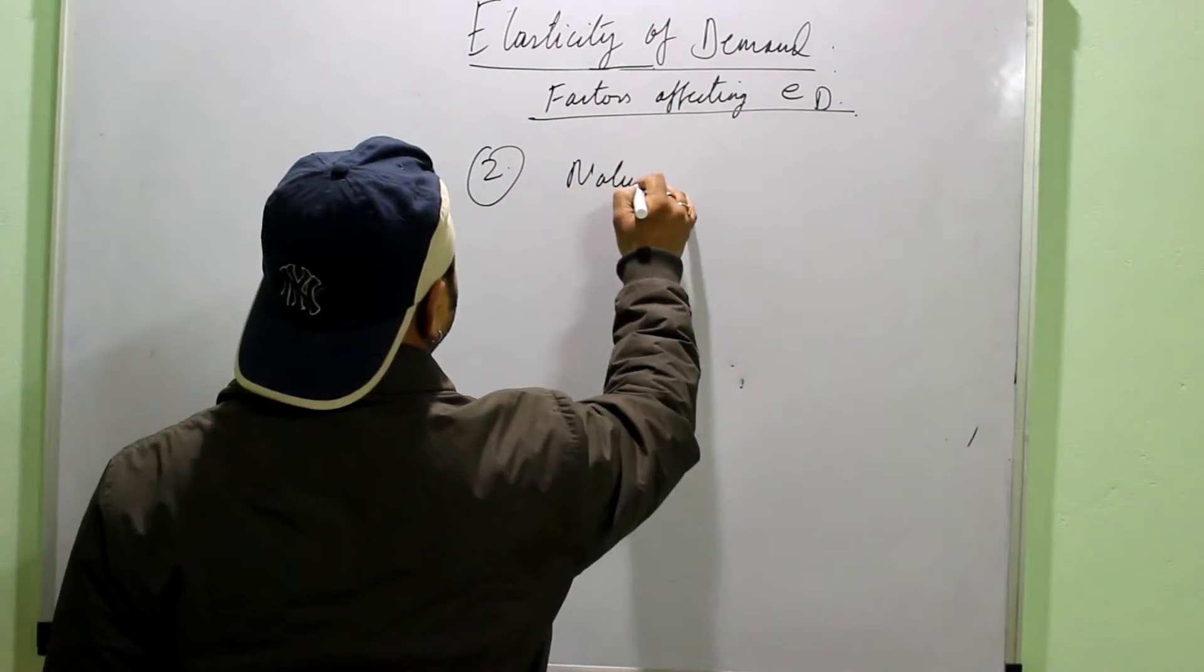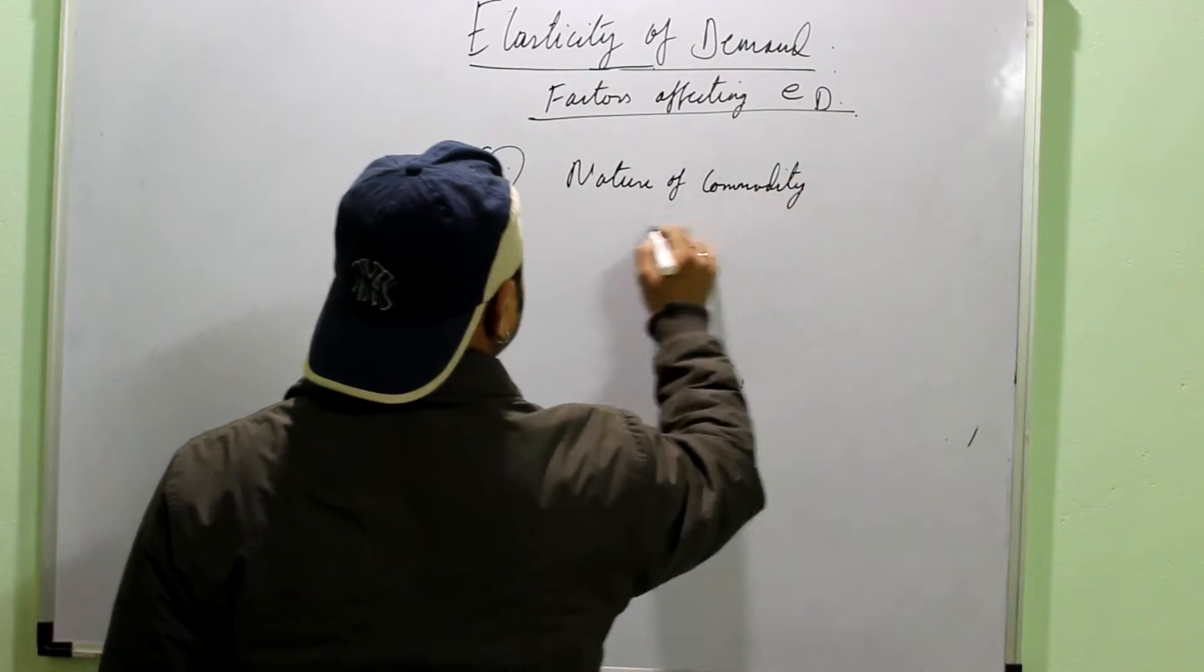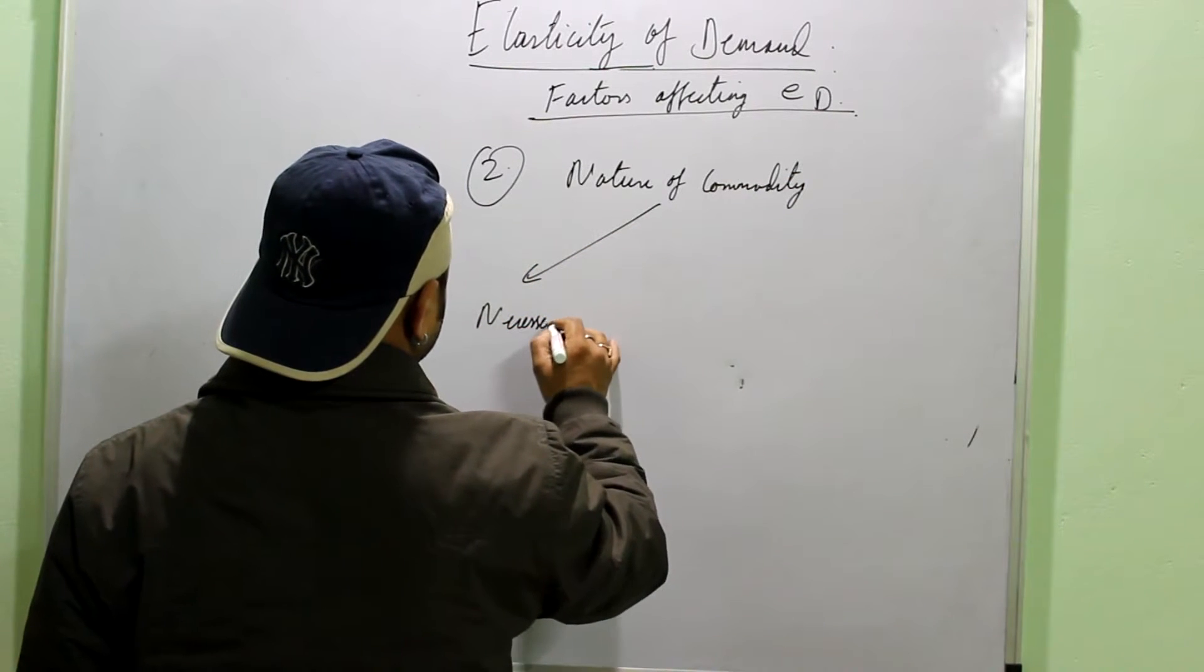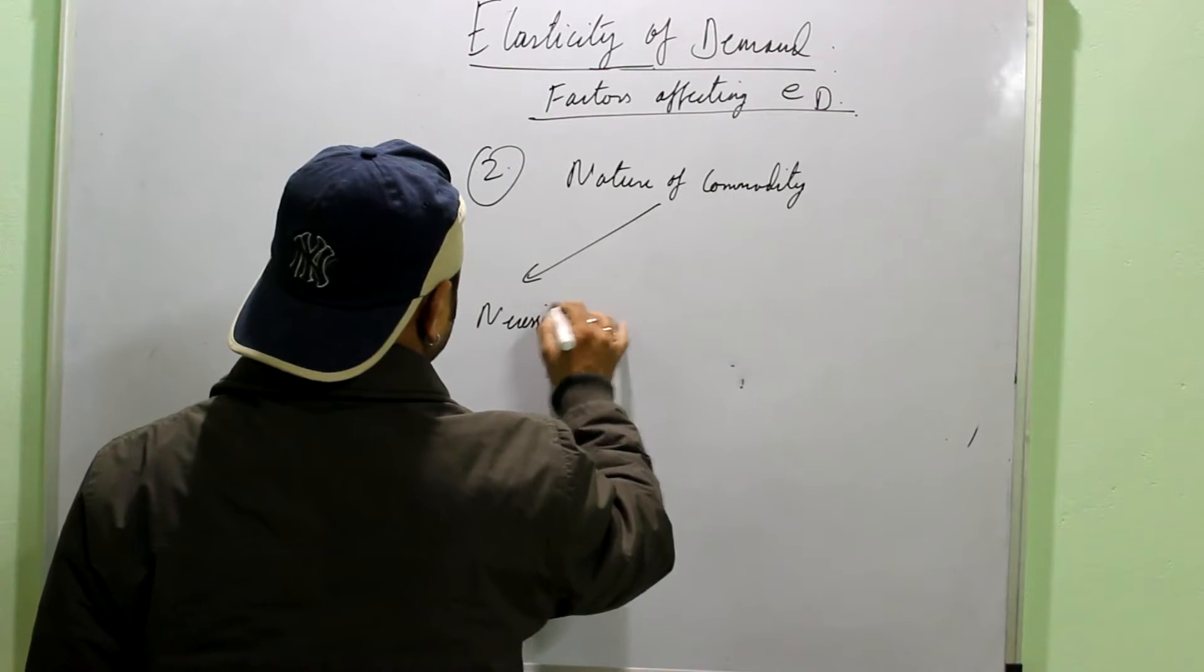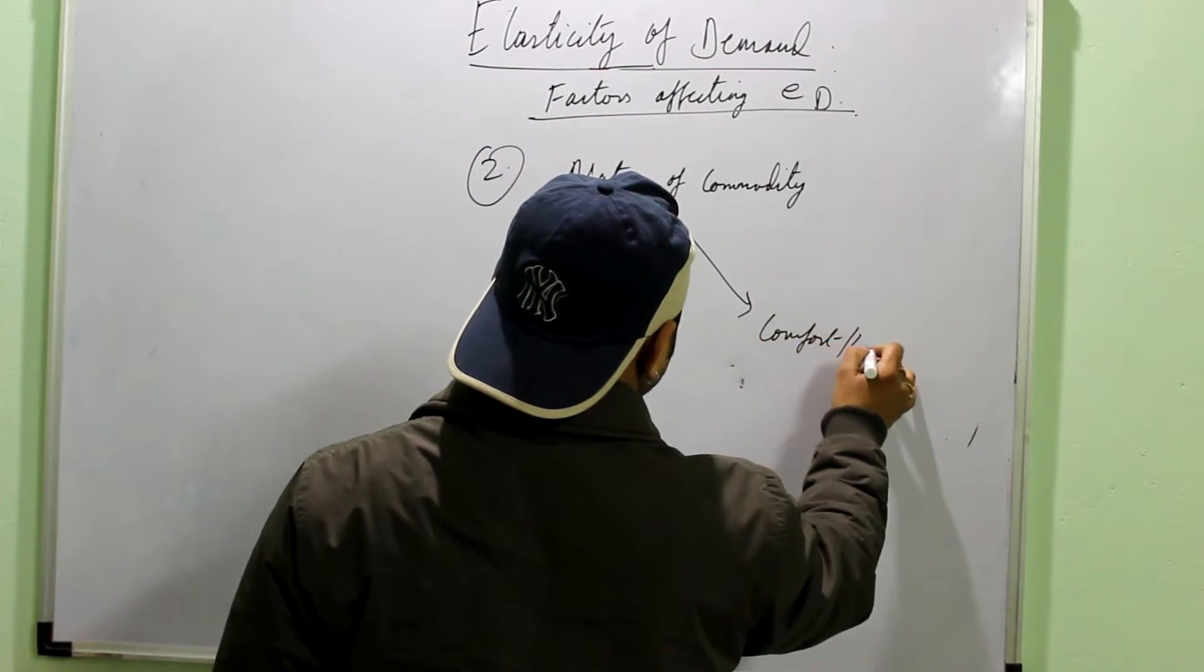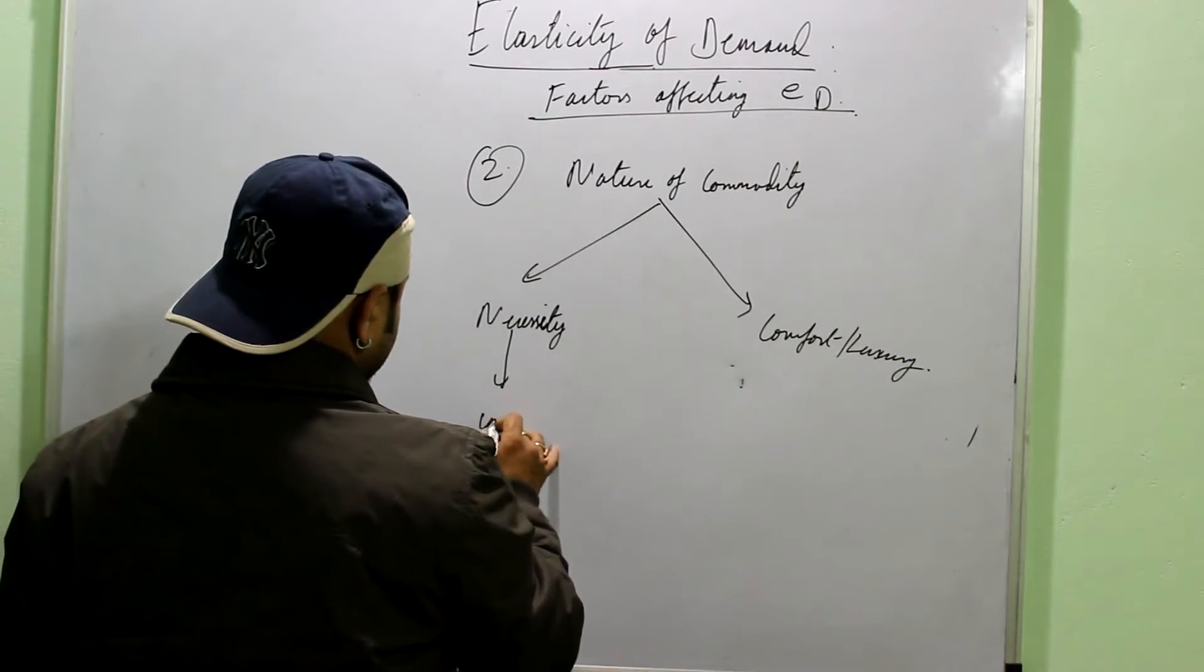Then, second is the nature of the commodity. You can divide it as necessity and a comfort or a luxury.